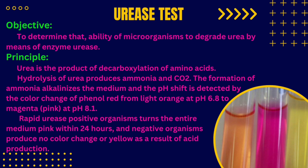Urea is the product of decarboxylation of amino acids — the carboxyl group is removed, liberating the reaction of decarboxylation. Hydrolysis of urea produces ammonia and carbon dioxide. Urease is the enzyme that carries out this hydrolysis, forming ammonia and carbon dioxide.